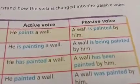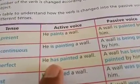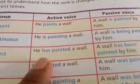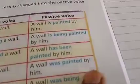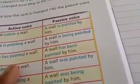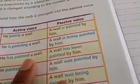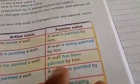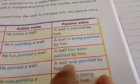Next is present perfect tense: 'He has painted a wall.' To change it into passive, 'a wall' takes the place of the subject. In present perfect tense, the helping verb used is 'has been' or 'have been.' So you will write: 'A wall has been painted by him.'